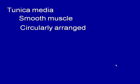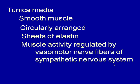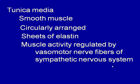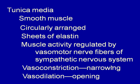The tunica media is the middle layer, composed of smooth muscle arranged circularly around the blood vessel. In various blood vessels, there are sheets of elastin to make them more stretchy. The muscle activity of the blood vessel is regulated by the vasomotor nerves of the sympathetic nervous system. When the muscles contract, you have vasoconstriction, narrowing the lumen. When the muscles are not signaled and are relaxed, you have vasodilation and the lumen opens up.